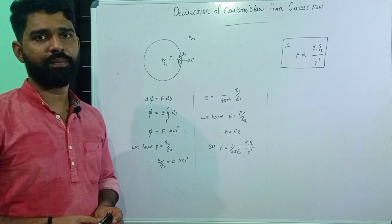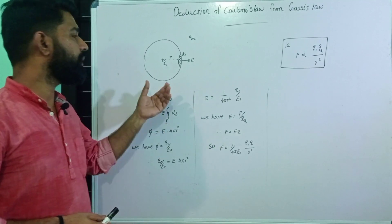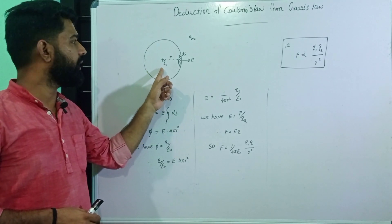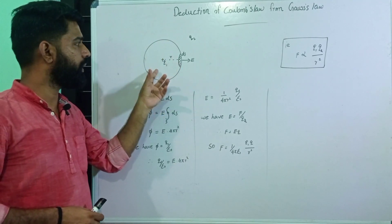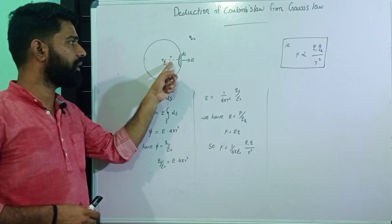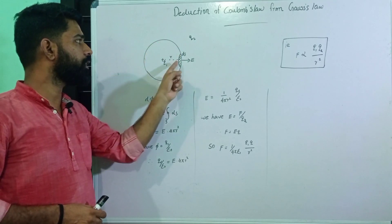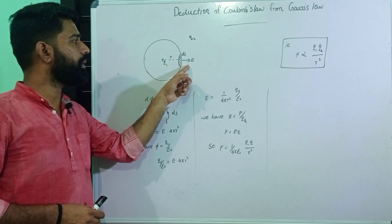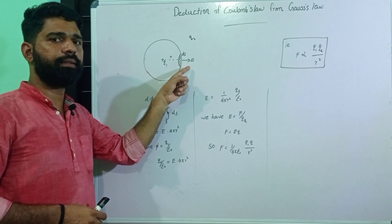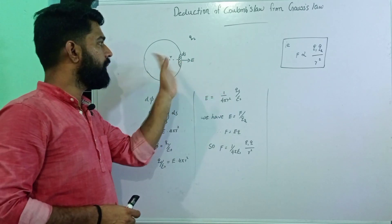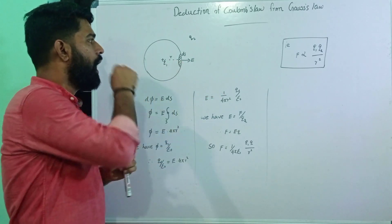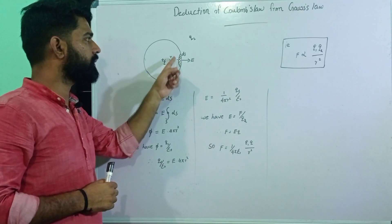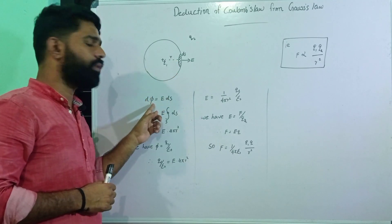Detection of Coulomb's law from Gauss's law. Here we are considering a positive charged particle q1, and we are considering a spherical surface with radius r. On that surface we are considering a small portion ds, with the electric field in the same direction as ds, that is theta is equal to zero.